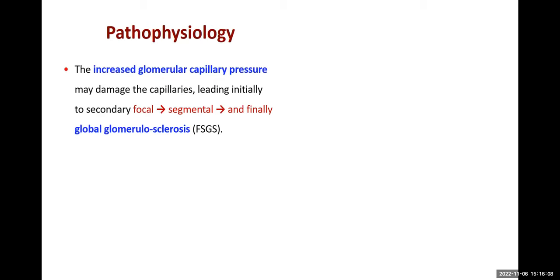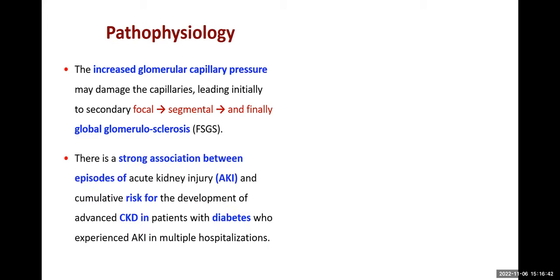Increased glomerular capillary pressure is a pathophysiological disadvantage in CKD. This increased pressure damages the capillaries, leading to focal segmental glomerulosclerosis or global glomerulosclerosis as the disease progresses from bad to worse. There is also a strong association between episodes of acute kidney injury and development of chronic kidney disease. Repeated attacks of AKI — due to drugs, diabetes, or other reasons — can also lead to CKD.